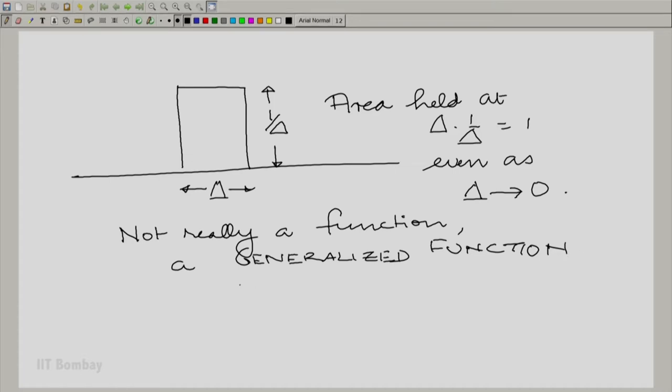I am not going to be too formal about explaining a generalized function at this time. All that I want us to appreciate is that a generalized function is not a function. This ever narrowing pulse with delta tending to 0 is a generalized function. It is a generalized function because it has some properties of function and some not.